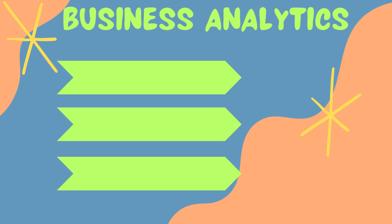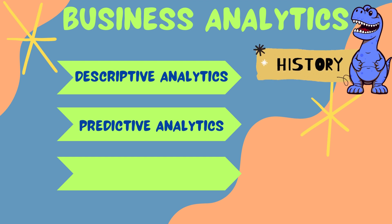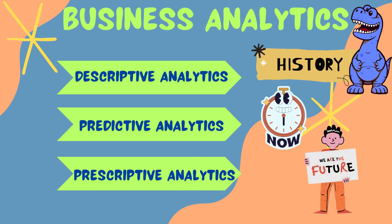The first one is descriptive analytics, which tells us what has already happened. The second one is predictive analytics, which shows us what could happen. And finally, prescriptive analytics, which informs us what should happen in the future. Let's learn more about them in detail.